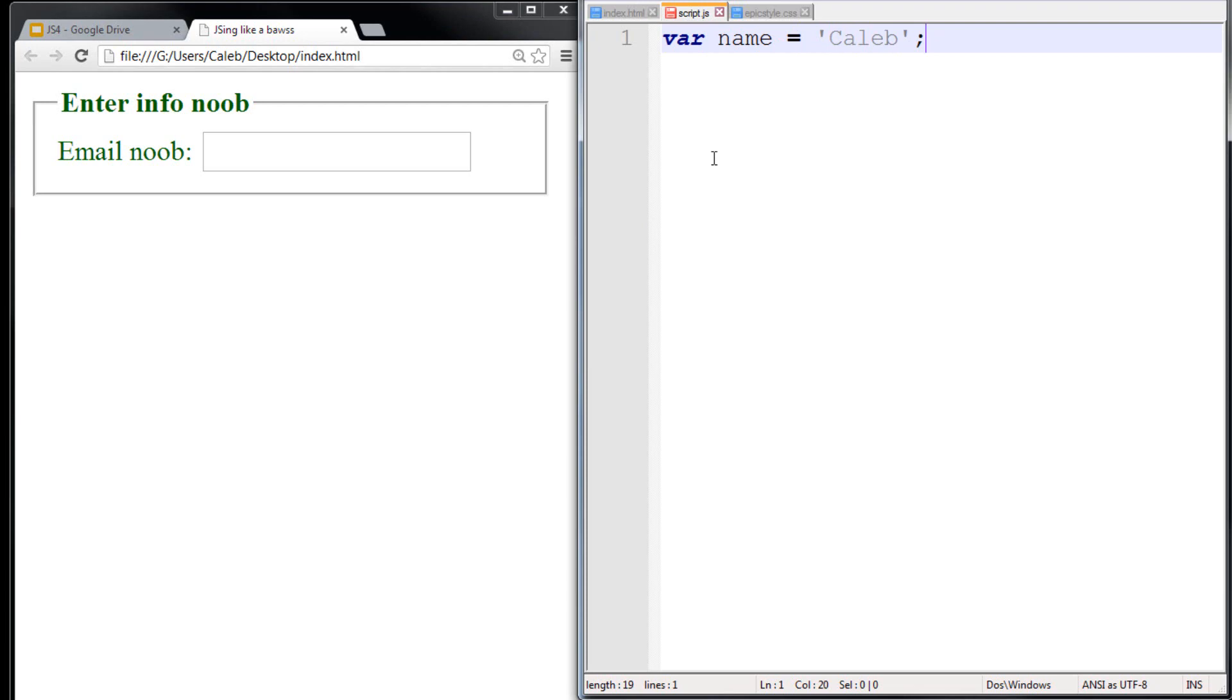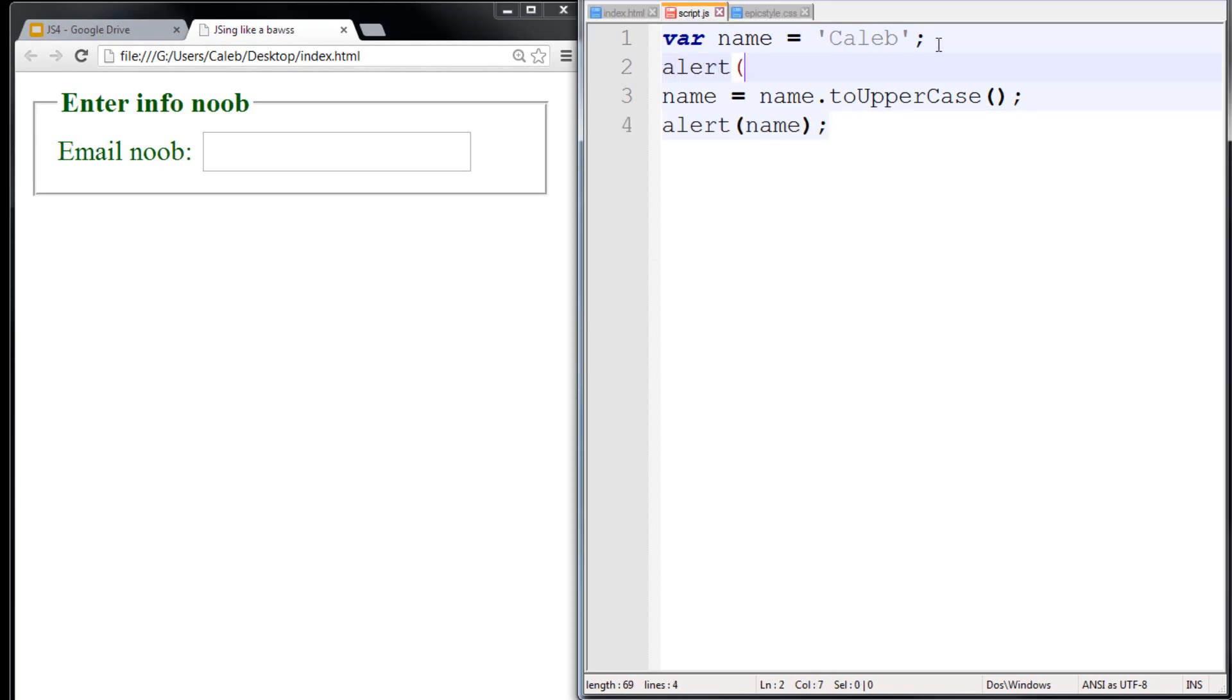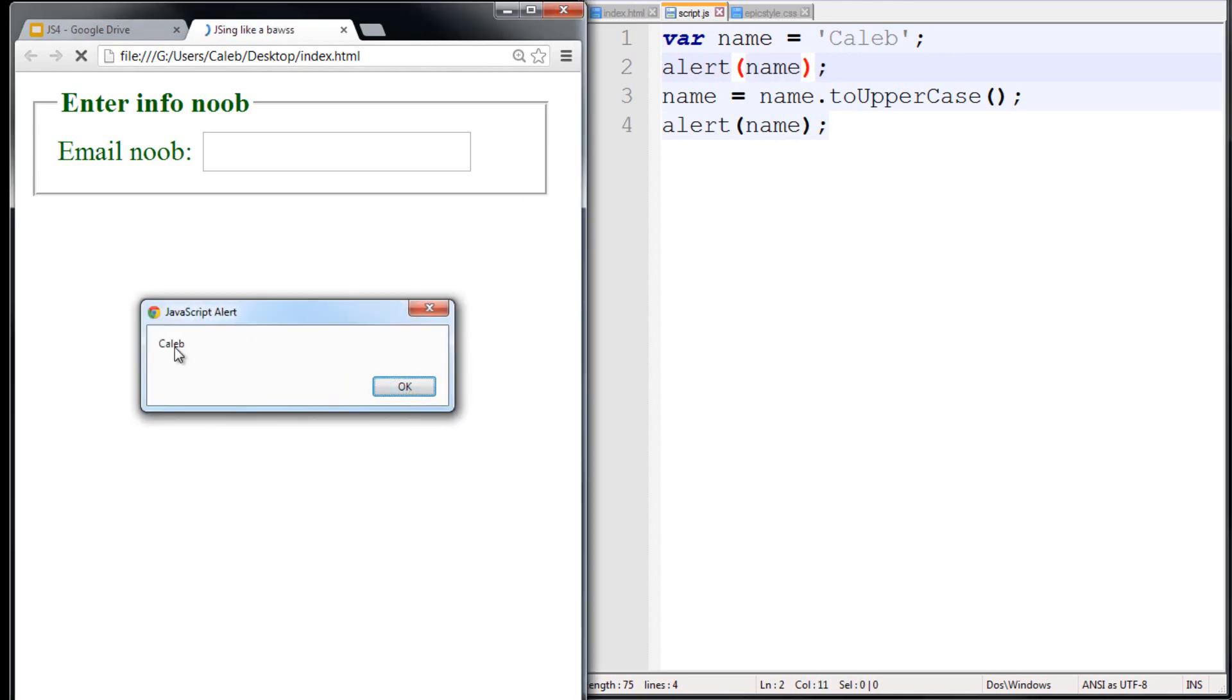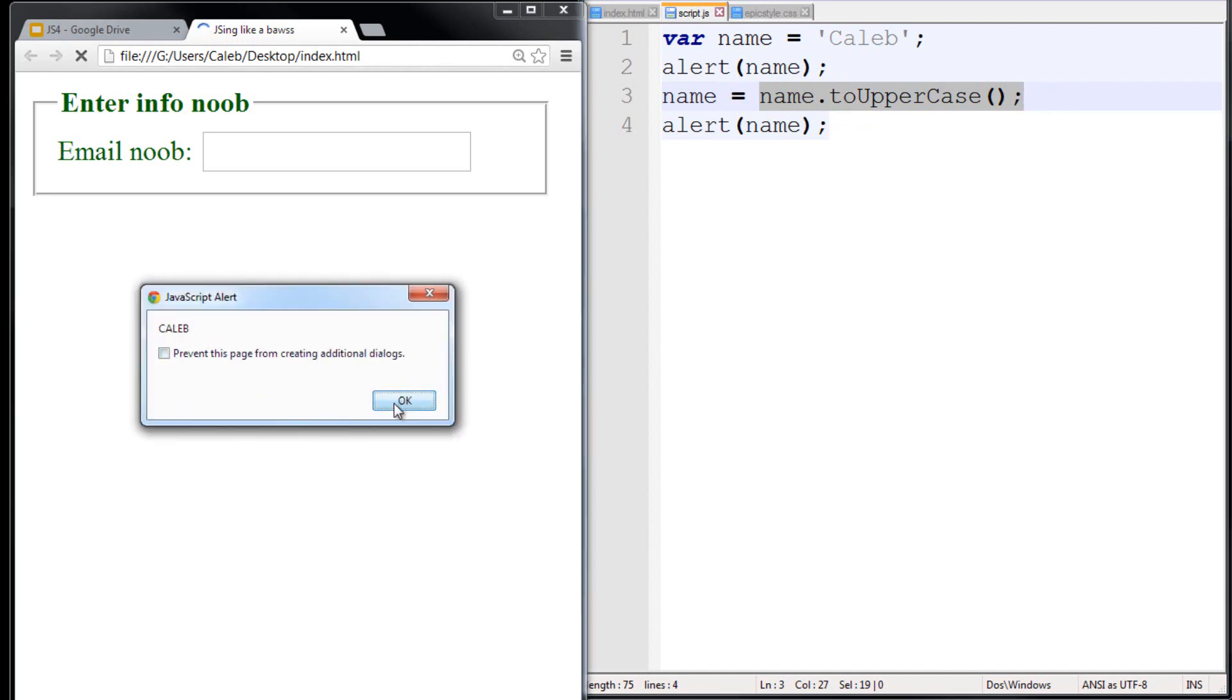So here we have a variable with the name, name, and it has the value, Caleb. Now we can reassign this. To see what they are, we can use what's known as an alert. And we can alert the variable name. So now, it's Caleb in all capital letters. If we put the alert here, refresh, it's going to be just Caleb with the capital C. Now, it's going to reassign the variable name to Caleb in all uppercase letters. And then we got Caleb in all uppercase letters.